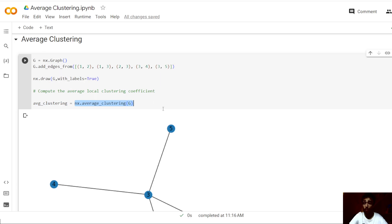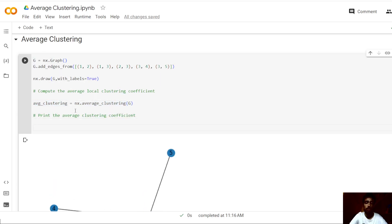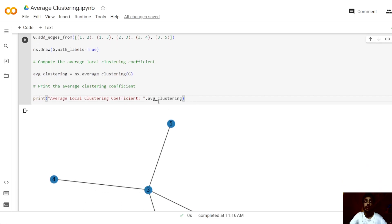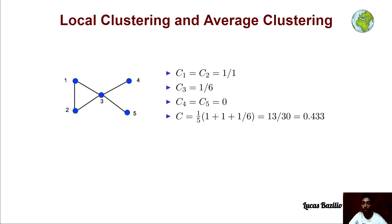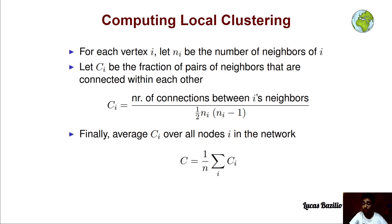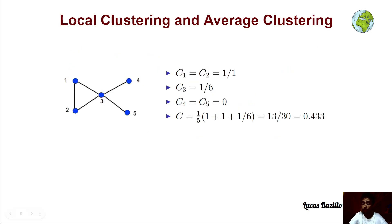Now we can print the average local clustering coefficient. We run the cell to verify that our calculations are correct. By definition, this justification is correct because we are applying the formal definition of local clustering. Now let's empirically demonstrate that NetworkX also computes the correct result, which is 0.43.